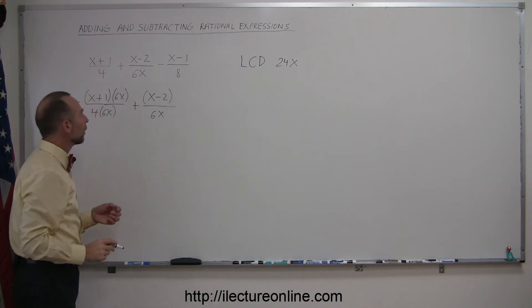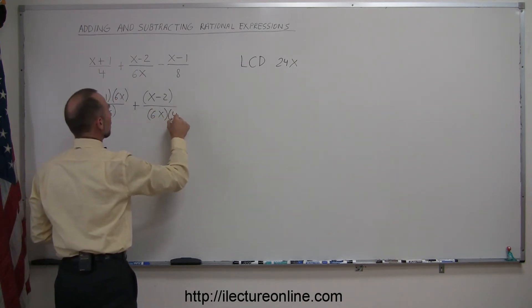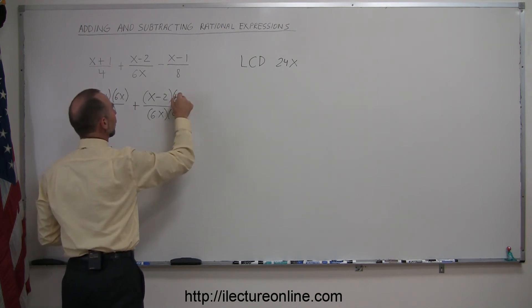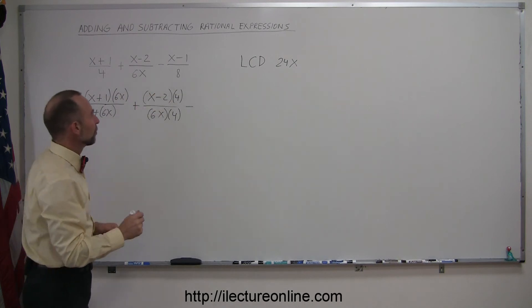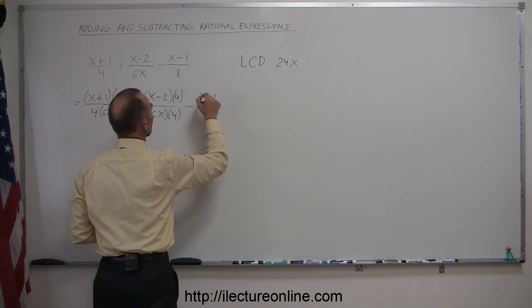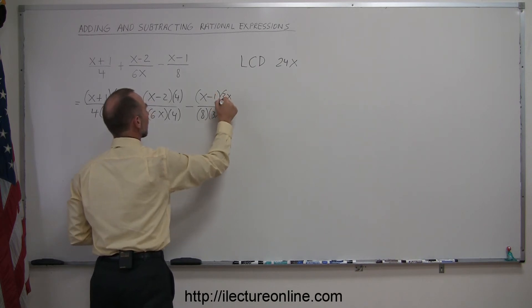And we have to multiply this one by 4, which means we also have to multiply the numerator by 4. Then we subtract the third fraction, we must multiply the denominator by 3x, which means we're going to multiply the numerator by 3x as well. There we go.